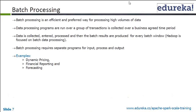So batch processing is the preferred way of processing a huge amount of data in big data applications. Typically, you group a lot of transactions over a defined period — which determines the frequency of your batch job: once a day, weekly, or twice a day. You collect that huge amount of data and process it in a given batch window.